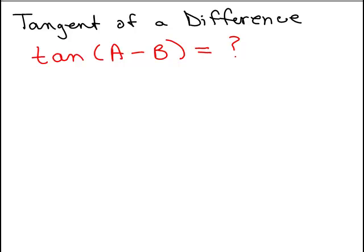All right, we've derived the tangent of a sum of two angles. Now we're going to find the tangent of a difference of two angles. So we want to know what's the tangent of A minus B.